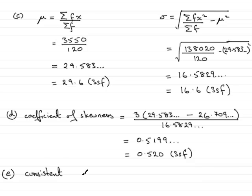And we've got to give a reason, and I would say since our value here, 0.520, is greater than 0. And that brings us to the end of part E.